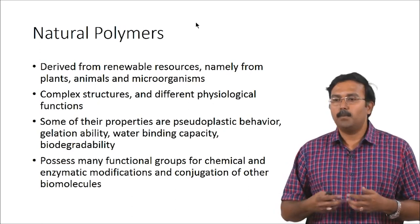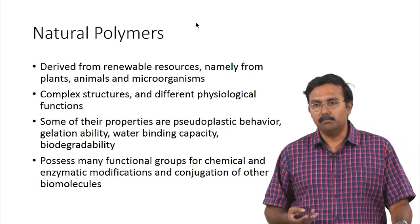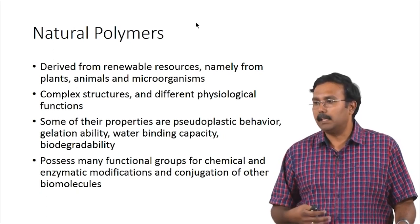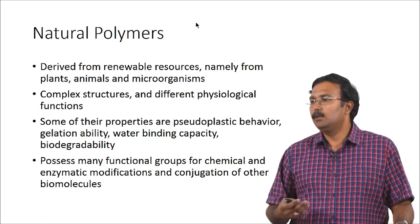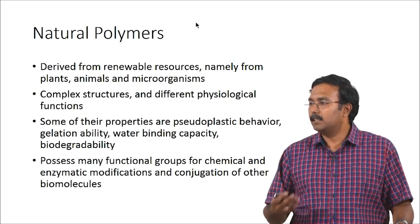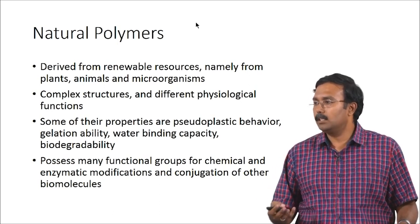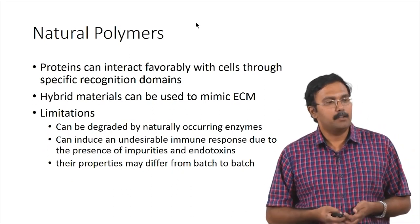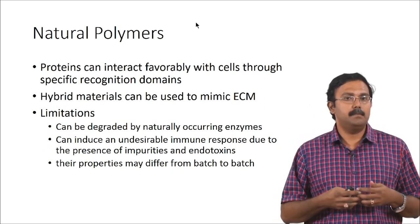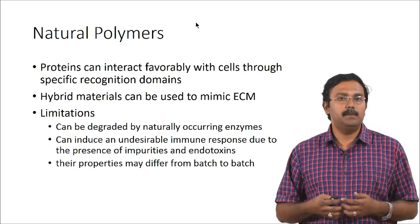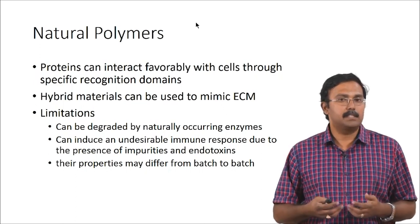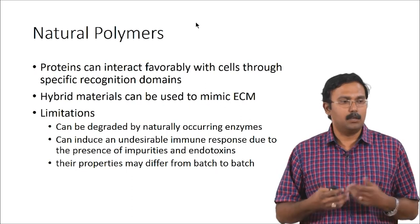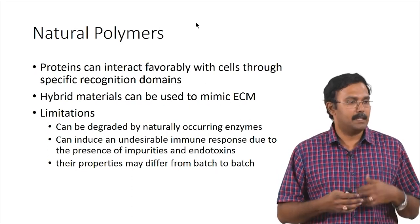That is an important property you would want in a base material because you want to impart bioactivity to the material. The base material you use should have functional groups to which you can actually conjugate these molecules. An advantage of using something like a natural polymer would be it can interact favorably with cells through specific recognition domains, because they do tend to interact with cells in the host organism where they are present.